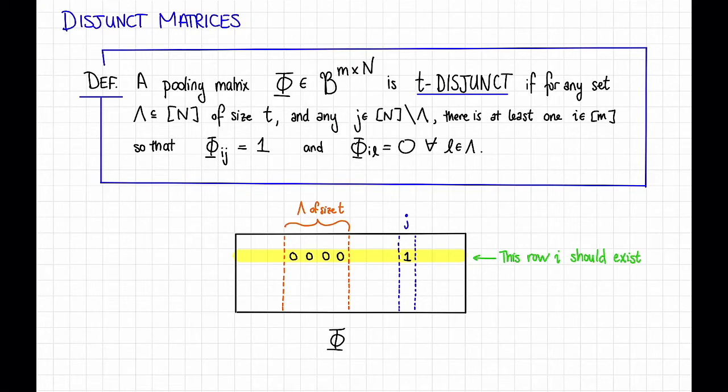So here's the definition of a t-disjunct matrix. First, recall that curly B is just the elements 0, 1 where plus means the boolean OR and times means the boolean AND. And recall that φ is a pooling matrix, which means that it's m by n where m corresponds to the number of tests and n corresponds to the number of items or people that we want to test. And φ just has a 1 in it in the ijth entry if we want to put person j into the ith test.